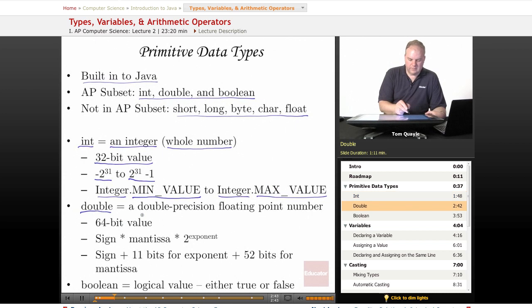Double is a double precision floating point number. Floating point number means that it has a decimal point, so it can have a decimal portion. Integers don't have a decimal or fractional portion, but floating point numbers do.